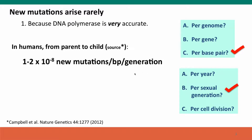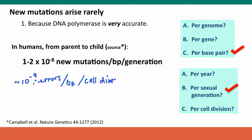We can reconcile this with the numbers from the previous lecture, where we said there are about 10 to the minus 9th remaining errors after mismatch repair and DNA proofreading have done their best to eliminate the mistakes that DNA polymerase makes. That's about 10 to the minus 9th errors per base pair per cell division — a smaller number, because we're now comparing not a single cell division but all the cell divisions between the fusion of egg and sperm and the production of the next generation's egg or sperm by the adult. That's more than 20 cell divisions.